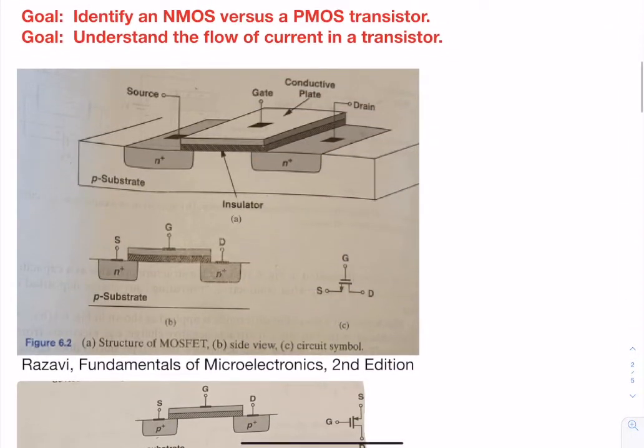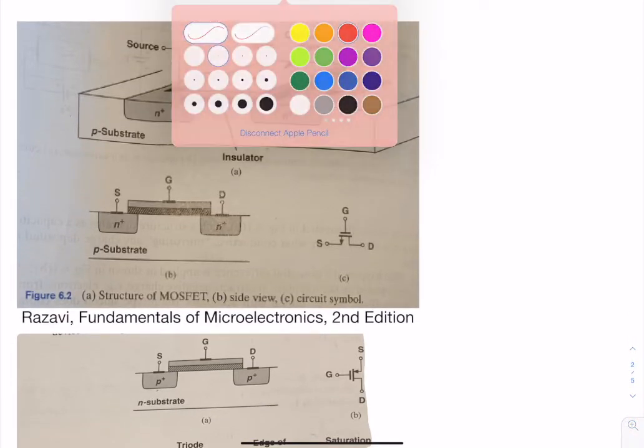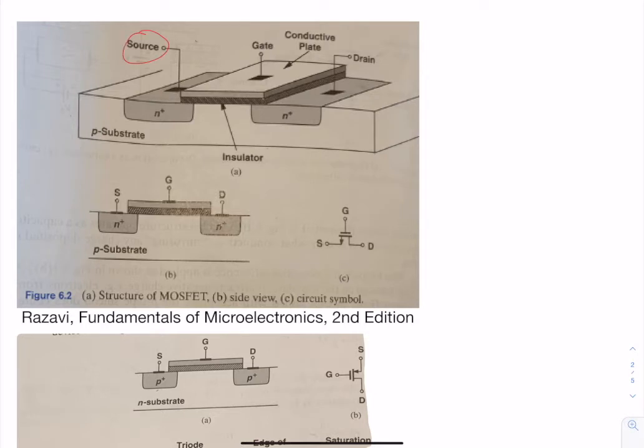Our goals are to identify the transistors and understand the flow of current in the transistors. So a transistor has multiple connections: a source, a gate, a drain, and a body.